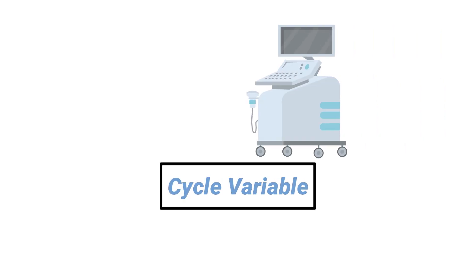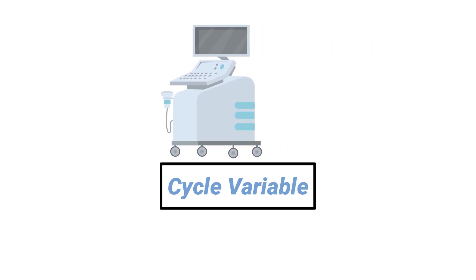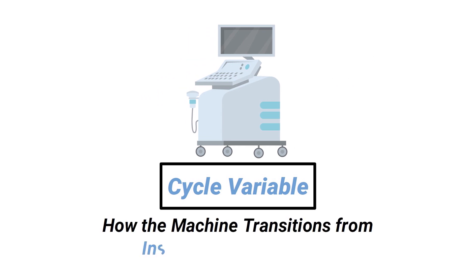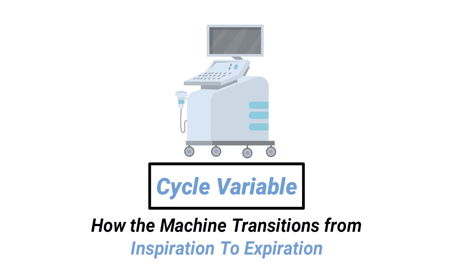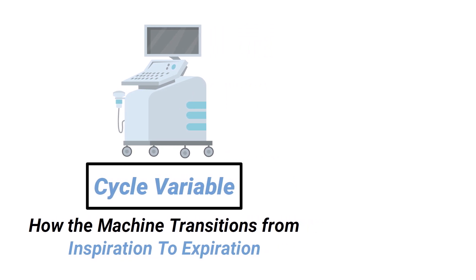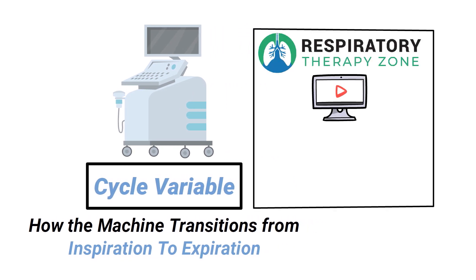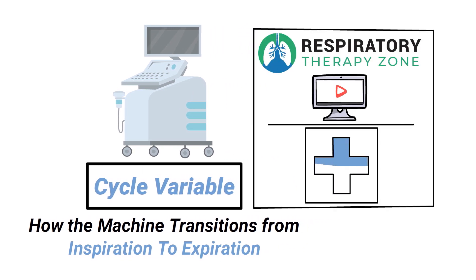A cycle variable on the mechanical ventilator is the mechanism that determines how the machine transitions from inspiration to expiration. We created this video to cover the medical definition and provide a brief overview of this topic, so if you're ready, let's get into it.